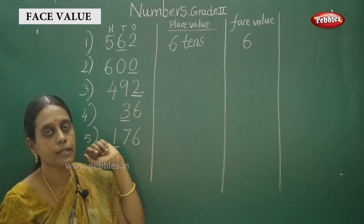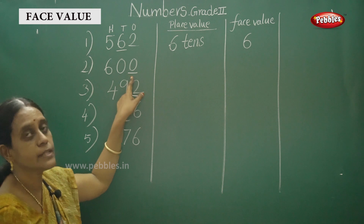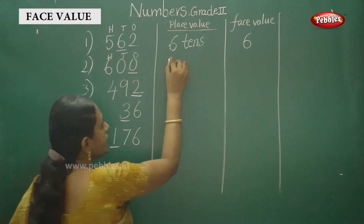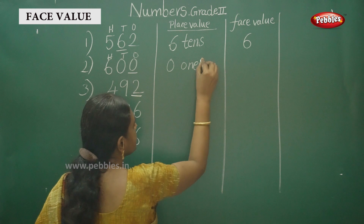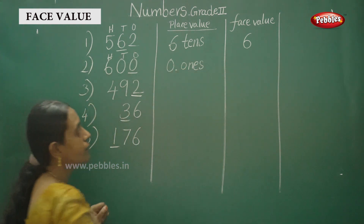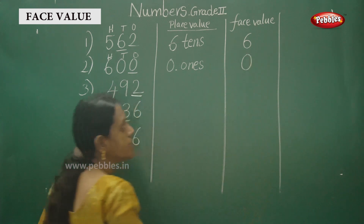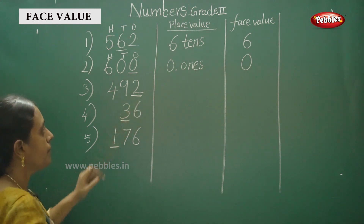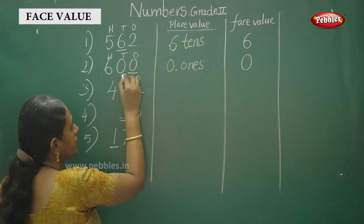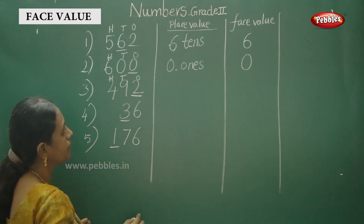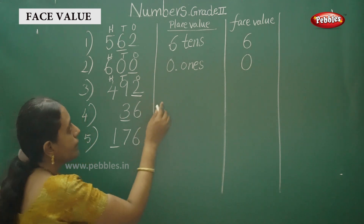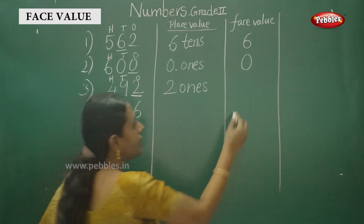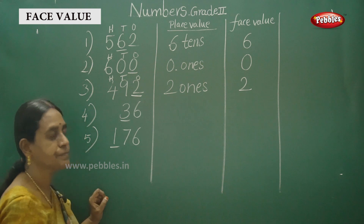Now that is what number — okay, next underline digit. What is the number? Ones, tens, hundreds — so zero is in the ones place. Okay — face value, the number itself, that is zero. Okay, next — two, underline digit. You have to write two — ones, tens, hundreds — okay, once, tens, hundreds. Two is in the ones place. Face value — the number itself, that is two.